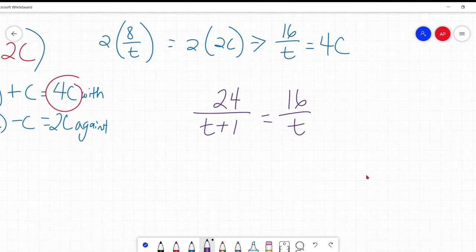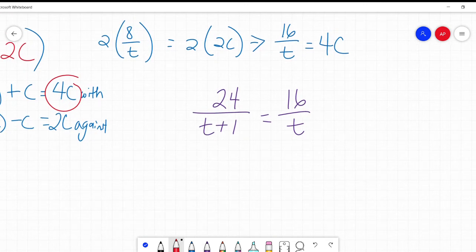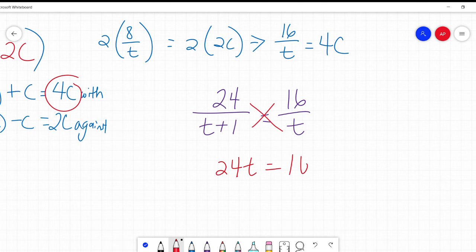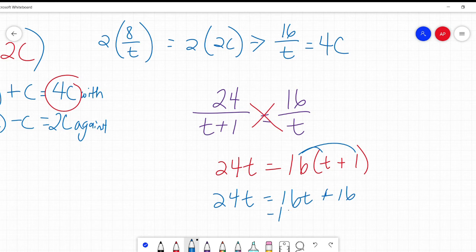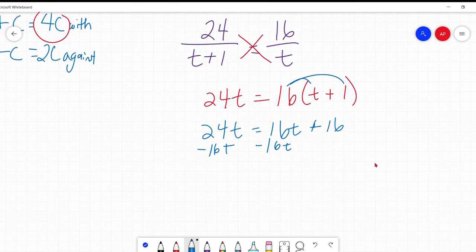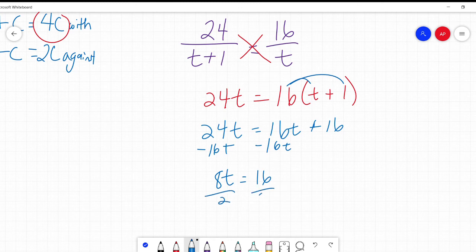So two C times two is four C. So I'm going to multiply this whole thing by two. So two times eight over T equals two times two C. So I'm going to get 16 over T equals four C. And now we have a four C and a four C. So now I can set 24 over T plus one as equal to 16 over T because they are both equal to four C. All right. So now we're in the home stretch. We can cross multiply and we get 24 T equals 16 times T plus one.